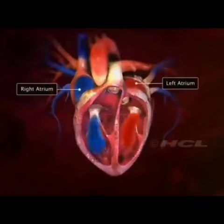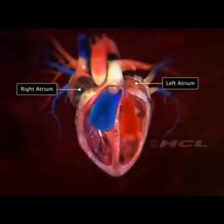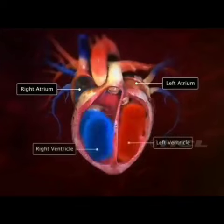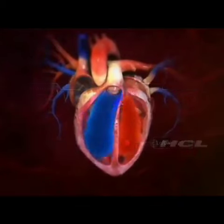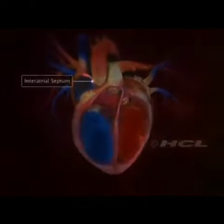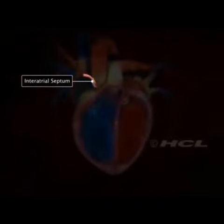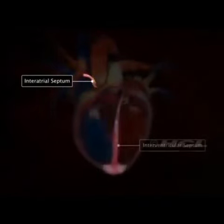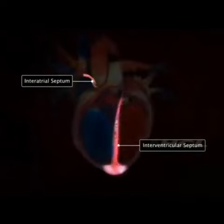The two upper chambers are the atria and the two lower chambers are the ventricles. The interatrial septum separates the two atria, and the interventricular septum is the partition between the two ventricles.